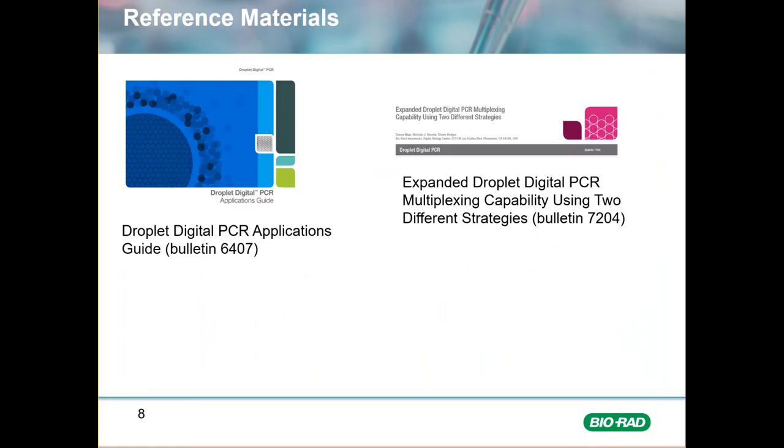For additional reading on multiplexing and other topics, look up the Droplet Digital PCR Applications Guide Bulletin No. 6407 and Bulletin 7204 for more information on multiplexing with Droplet Digital PCR. Thank you for your time.